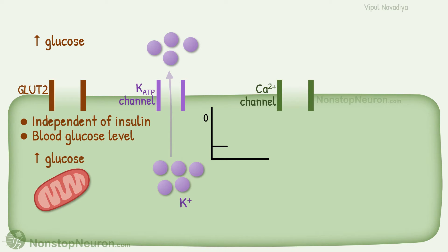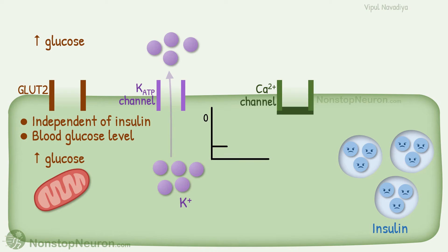This voltage is important for voltage-sensitive calcium channels. At negative potential, these channels are closed. They open only when the cell depolarizes. Finally, we have preformed insulin stored in secretory vesicles. So, this was the resting condition.